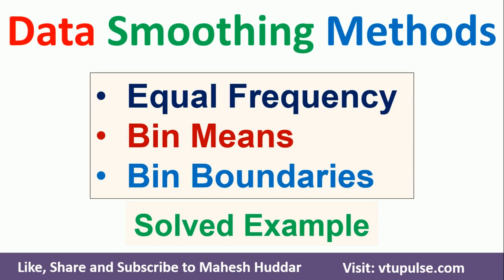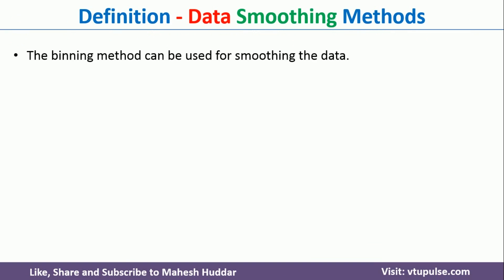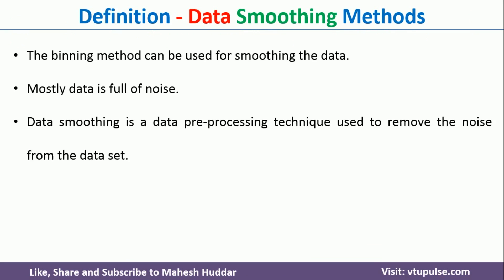Welcome back. In this video, I will discuss what are the different data smoothing techniques available in data mining and how to apply different data smoothing techniques for the given data set with a simple solved example. The binning methods are usually used for data smoothing in data mining. Whenever you collect data for applying any data mining techniques, usually the data contains a lot of noise. Data smoothing is one of the data pre-processing techniques used for removing the noise from the data set.